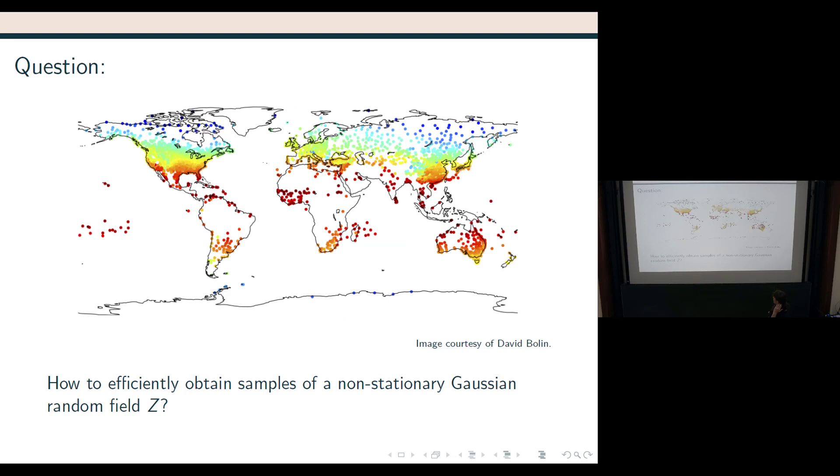So what are we doing and why? The question is actually how do you efficiently obtain samples of a non-stationary Gaussian random field Z? This nice picture I got from David Bolin who is a co-author of my co-author who is actually using these samples in spatial statistics. They want to model, in this case I believe it is temperature they want to model, and they have some uncertainty that they capture in a Gaussian random field.